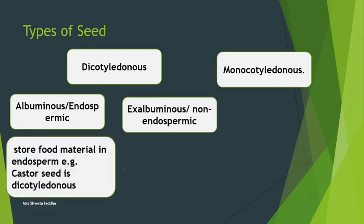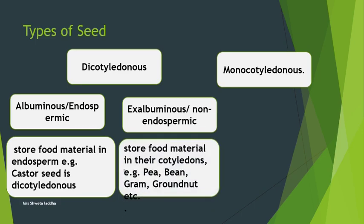Dicotyledonous seeds can also be classified as albuminous seeds, also called endospermic seeds, or ex-albuminous, that is non-endospermic seeds. Albuminous seeds have endosperm where they store food material - for example, castor seed is a dicotyledonous endospermic seed. Ex-albuminous or non-endospermic seeds do not have endosperm, or if they do, it is utilized when the embryo develops. The food material is stored in cotyledons; examples are pea, bean, gram, and groundnut.